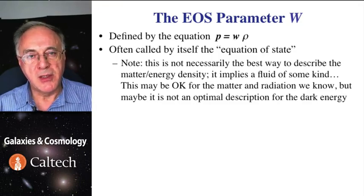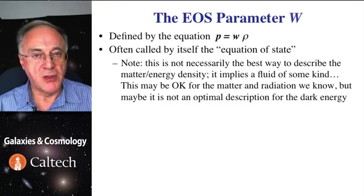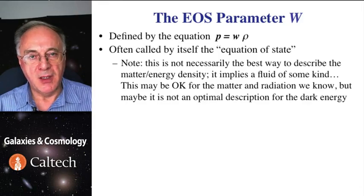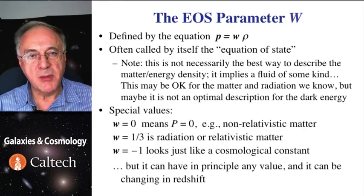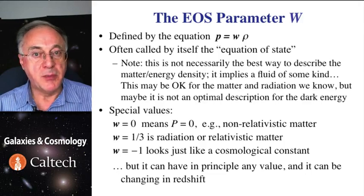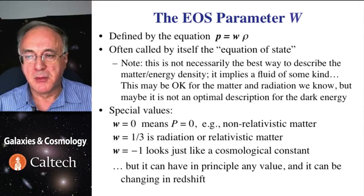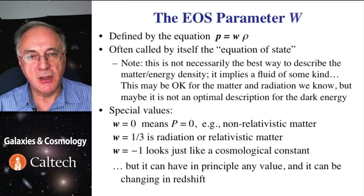Also, we know that some of the major components like ordinary matter, energy density, or cosmological constant are behaving in this fashion. So there's some special values. W of zero means that pressure is zero, and that's for non-relativistic matter, just galaxies or atoms that do not interact other than gravitationally.